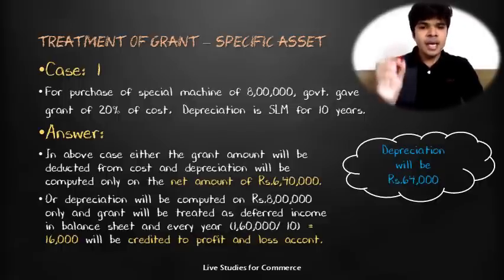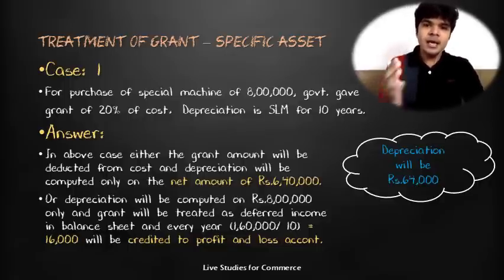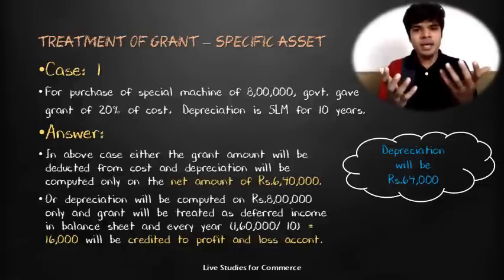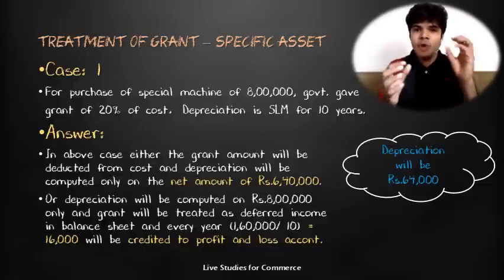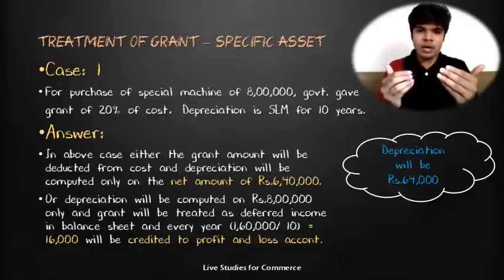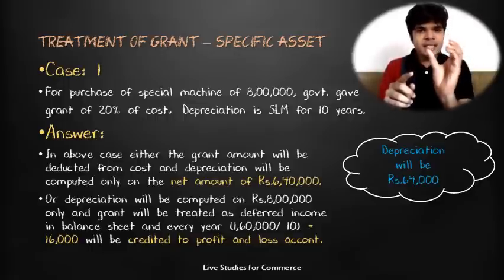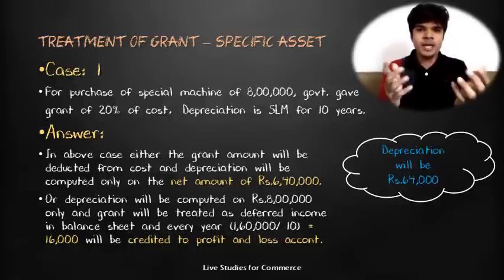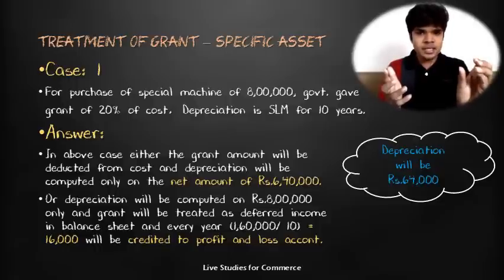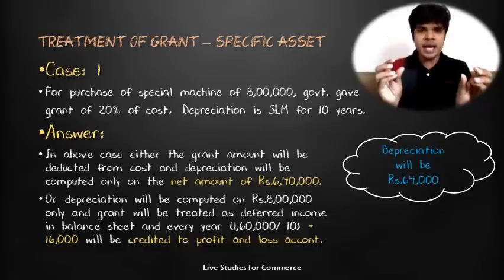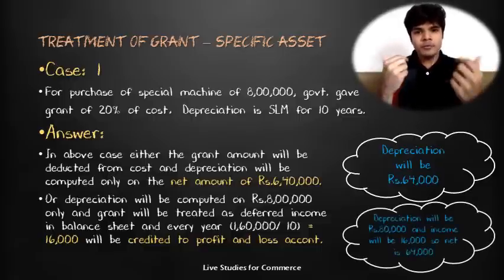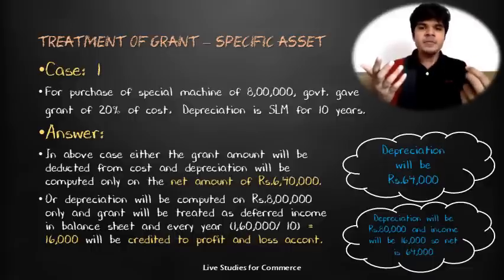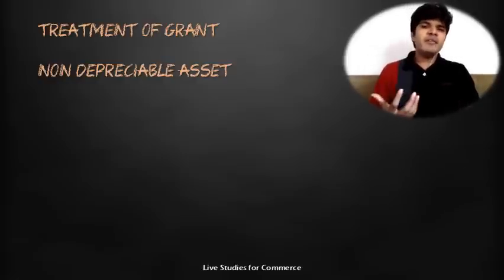In the second method, you show the asset at ₹8 lakh in the balance sheet and record the government grant of ₹1,60,000 as deferred income. Depreciation will be ₹8 lakh ÷ 10 = ₹80,000, but ₹1,60,000 ÷ 10 = ₹16,000 of deferred income is credited to profit and loss each year. So ₹80,000 is debited as depreciation and ₹16,000 is credited as income — the net effect is ₹64,000 in both cases, and the accounting treatment is the same.